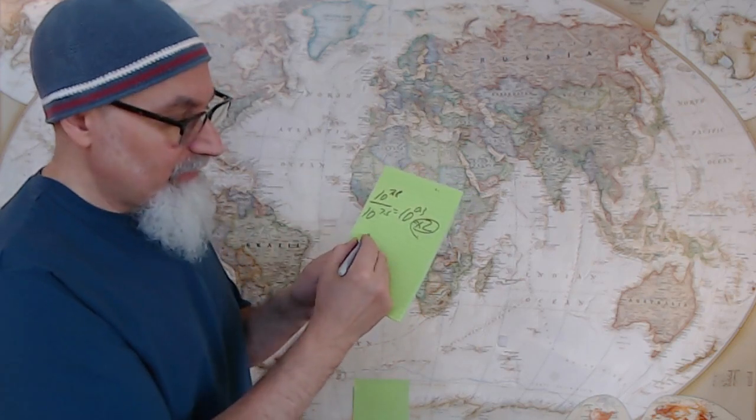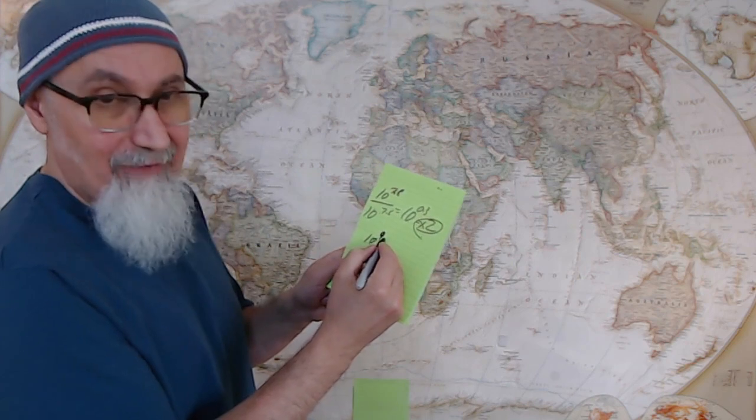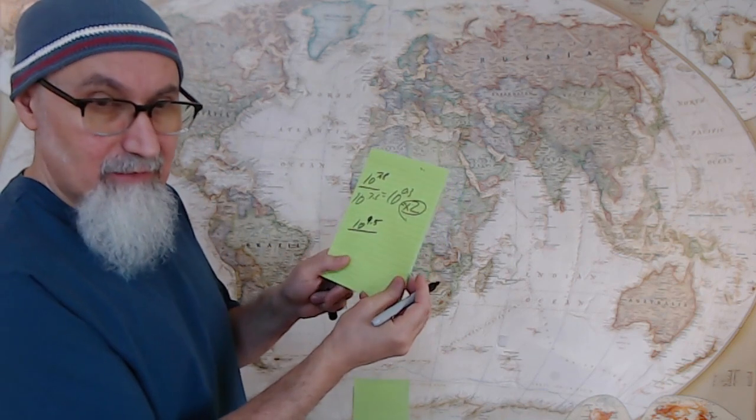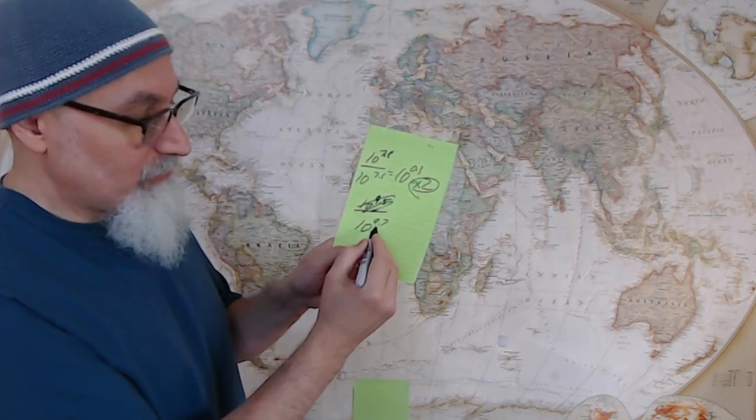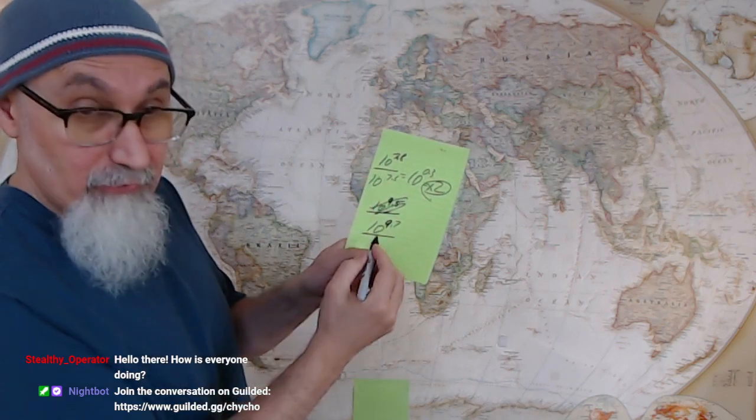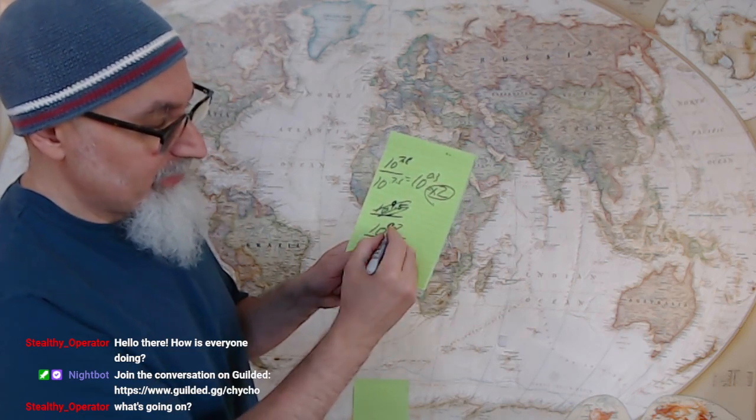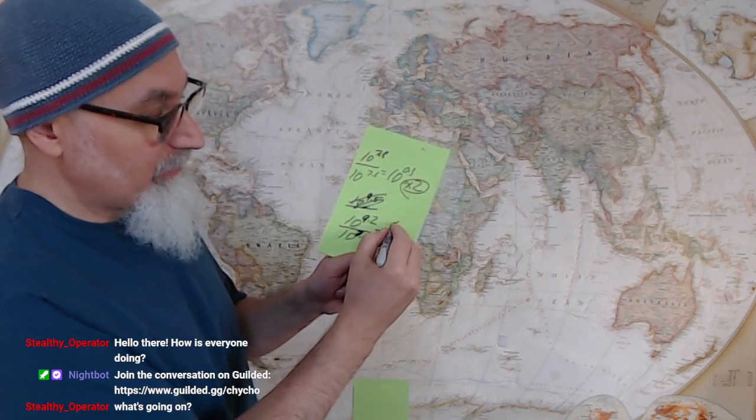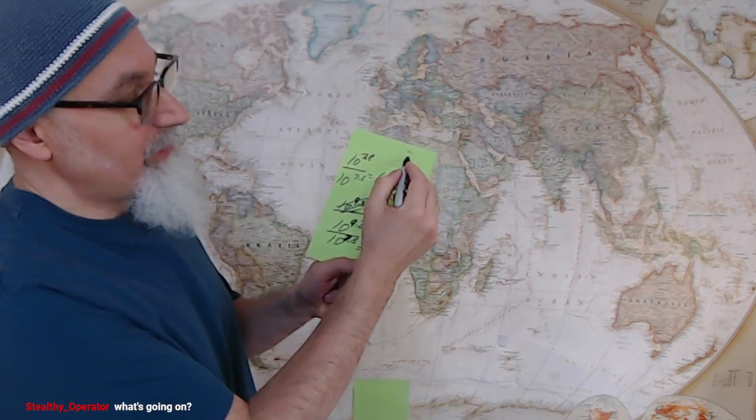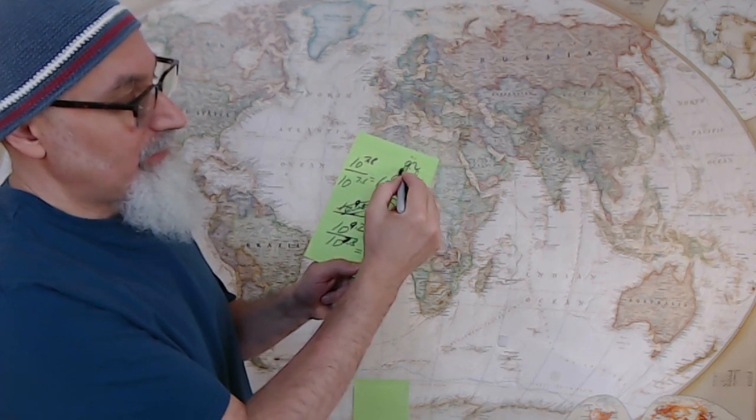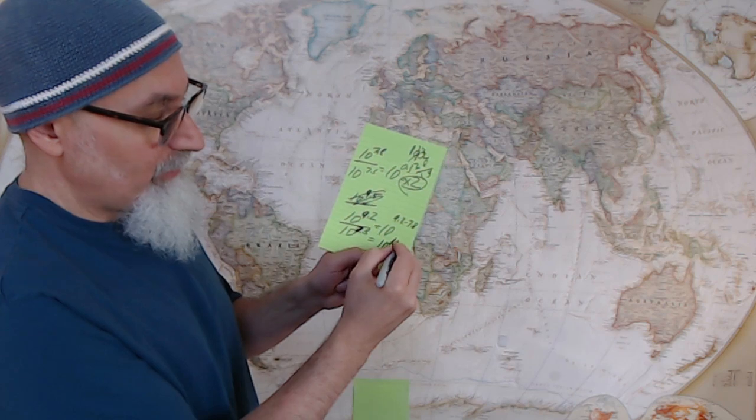Now, in Alaska, I believe we had 10 to the power of 9.2. So this is going to be 10 to the power of 9.2 minus 7.8, which is 1.4. Punch down your calculator, see what you get. 10 to the power of 1.4.